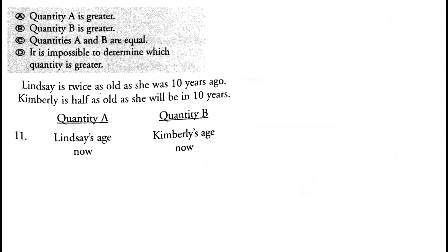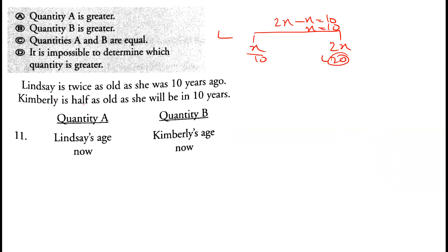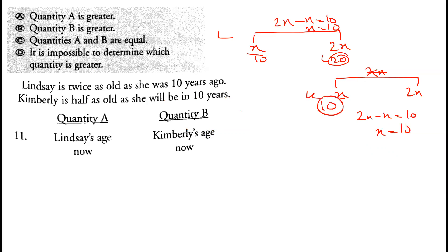Question eleven: Lindsay is twice as old as she was 10 years ago. If she was x ten years ago, now she is 2x, and 2x - x = 10, so x = 10 and Lindsay is 20 now. Kimberley is half as old as she will be in 10 years. If she is x now, in 10 years she is 2x, and 2x - x = 10, so x = 10 and Kimberley is 10. Lindsay (20) is greater than Kimberley (10), so option A is correct.